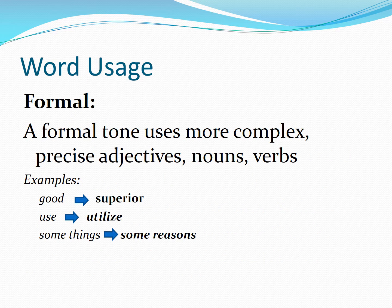Regarding word usage, formal writing uses a more precise tone with complex adjectives, nouns, and verbs. For example, instead of saying 'good', say 'superior'; instead of 'use', say 'utilize'; and instead of 'some things', say 'some reasons'.